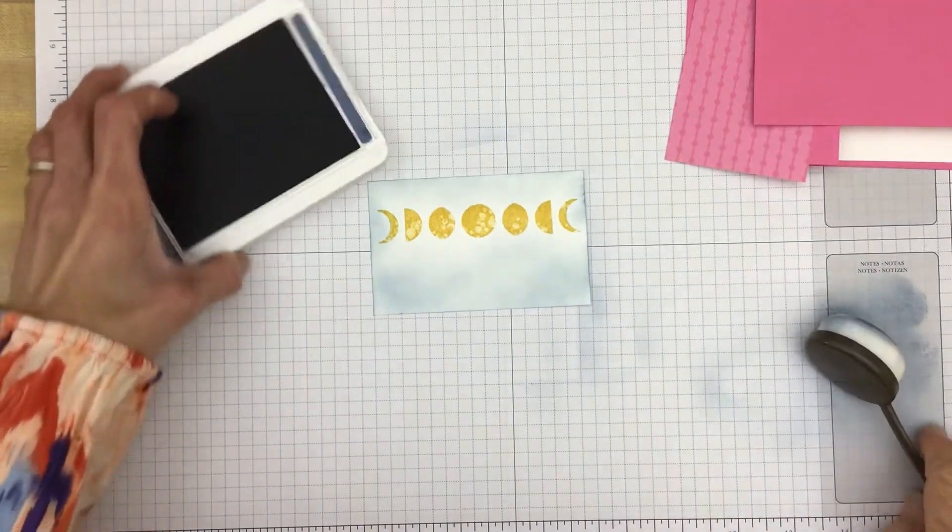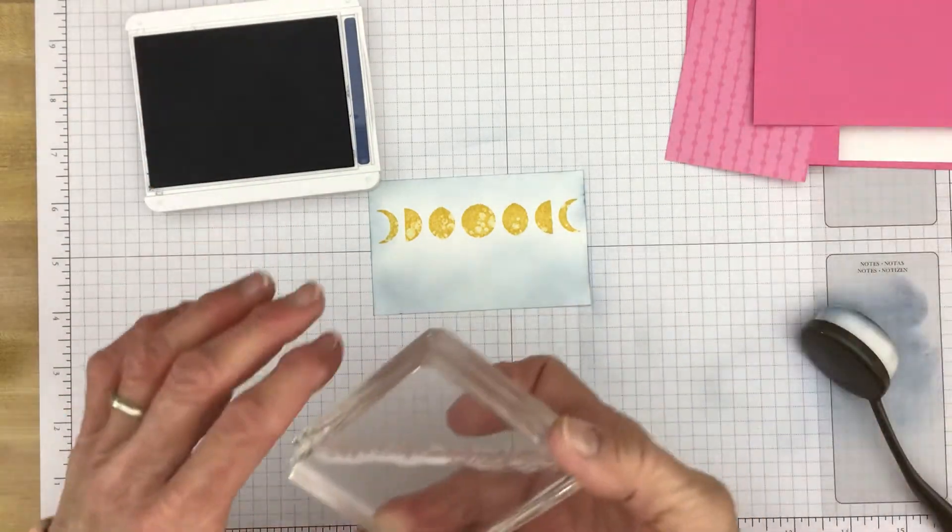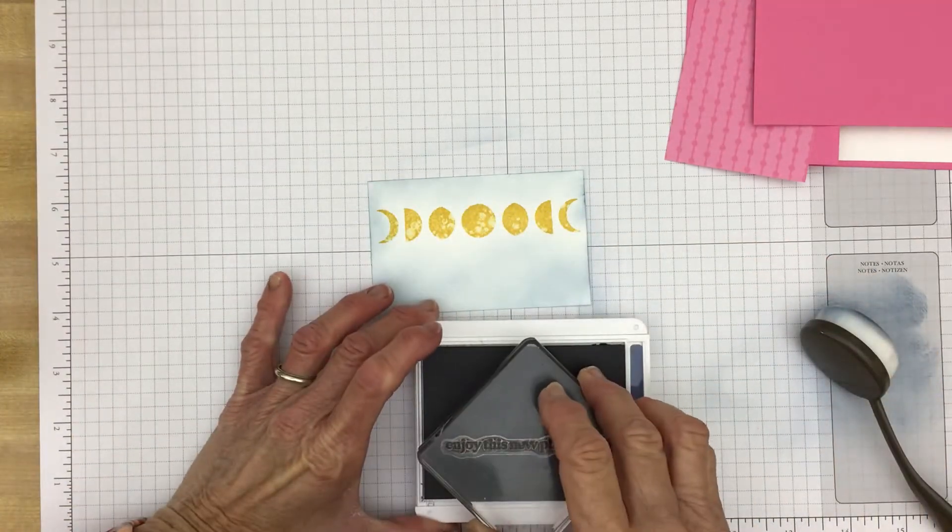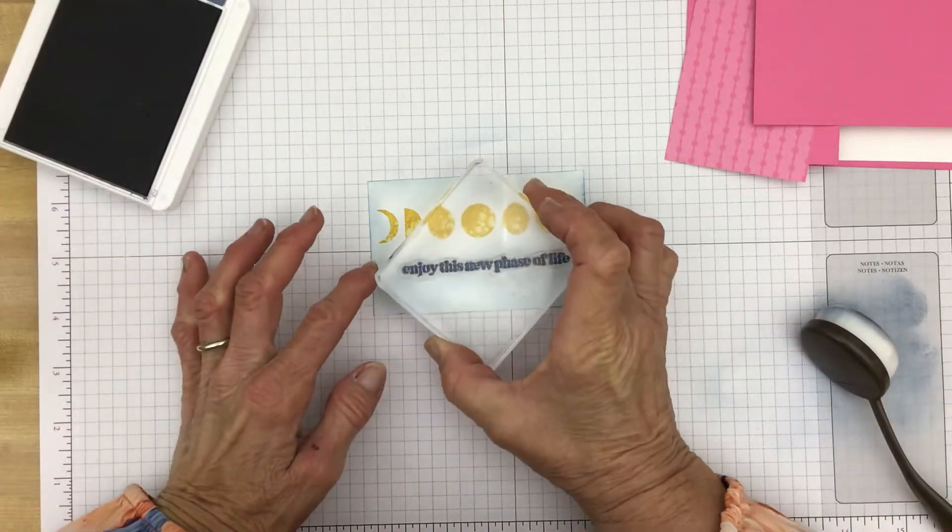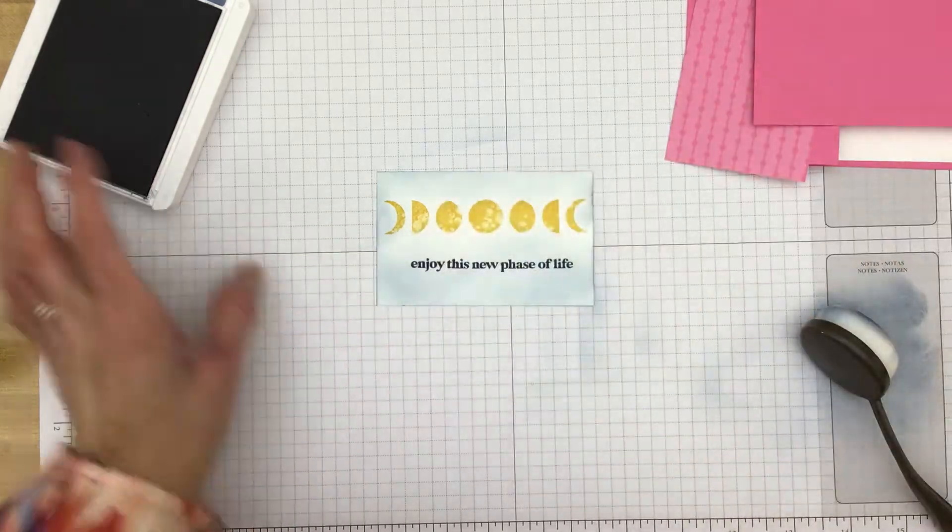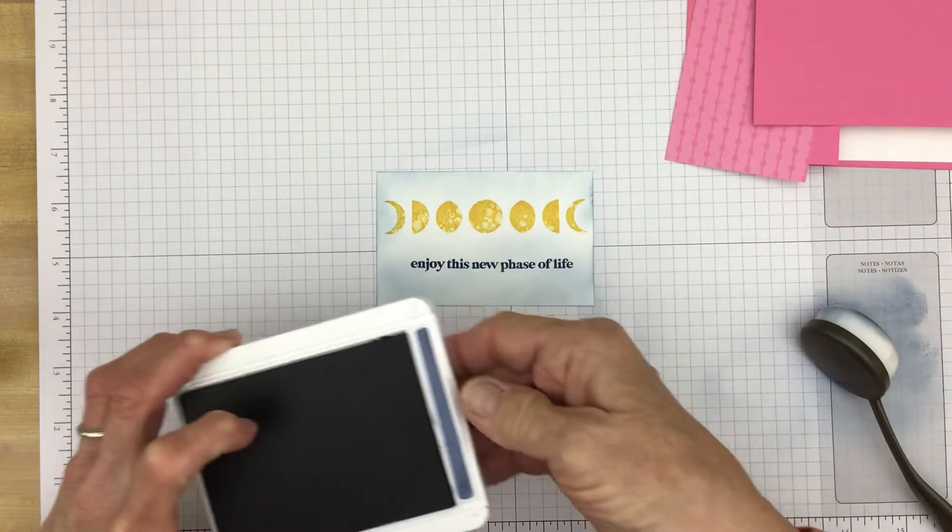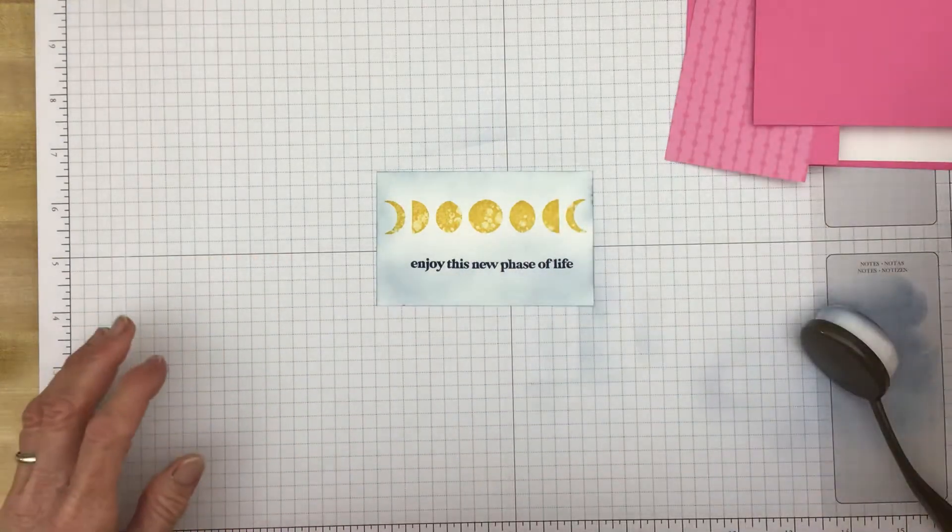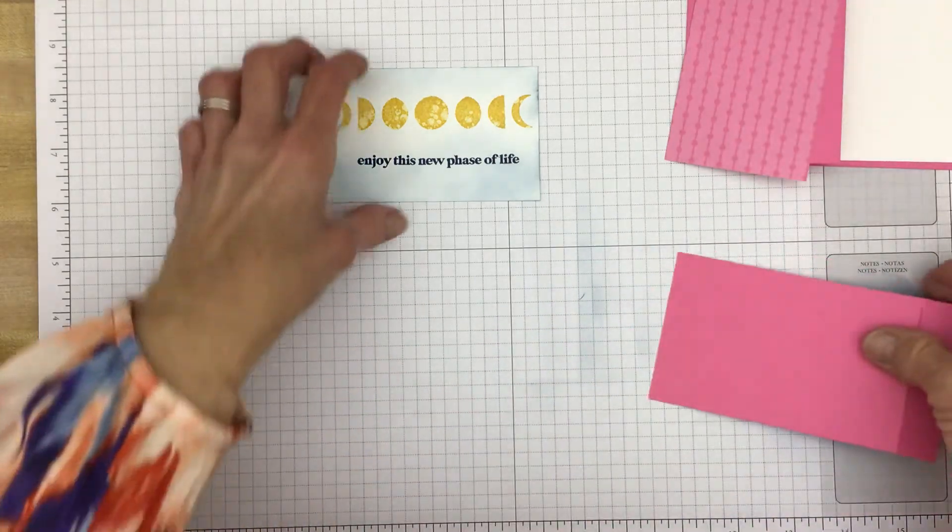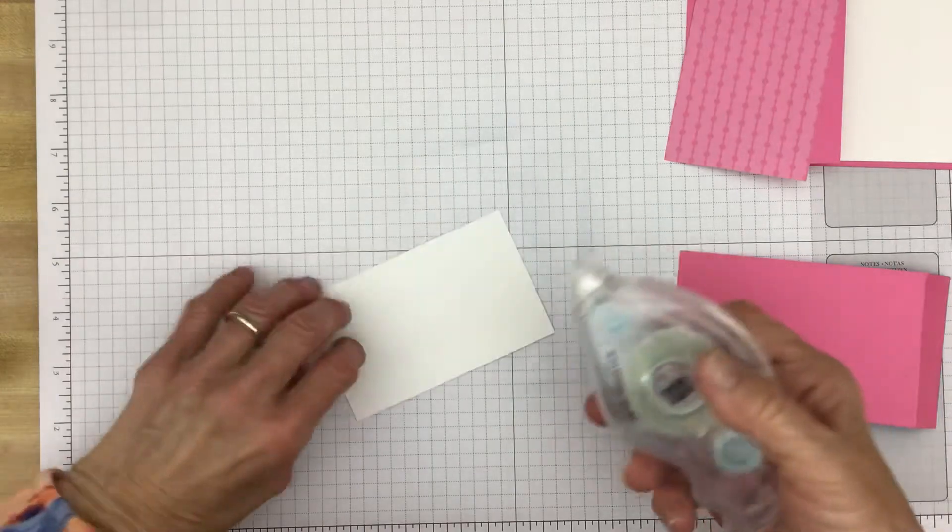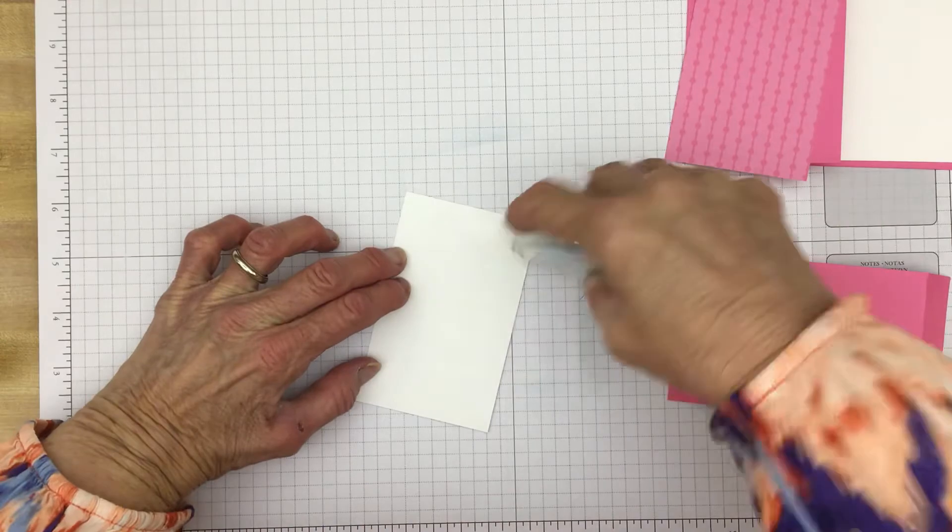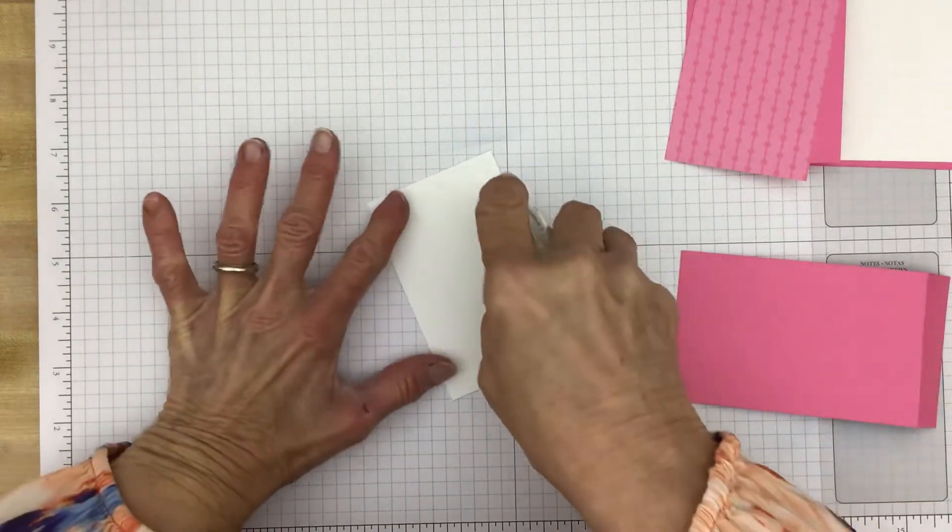I honestly think that looks pretty good. And now we're going to take this stamp that says enjoy this new phase of life. And just full strength here, I'm just going to stamp it. There we go. And we'll need this ink pad in a minute for the inside. We'll begin assembling the card. I'm going to use my Stampin' Seal.